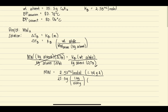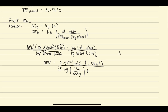We still need to find the change in boiling point. We know that the change in boiling point equals the boiling point of the solution minus the boiling point of the solvent. That is 80.78 degrees Celsius minus 80.06 degrees Celsius, which gives us 0.72 degrees Celsius. We will use this value for the change in boiling point.